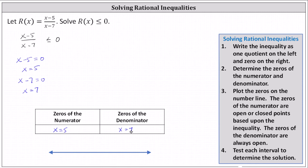Next, we plot the zeros on the number line. The zeros of the numerator are either open or closed points based upon the inequality symbol. If the inequality symbol is less than or equal to, or greater than or equal to, the zeros of the numerator are closed points. If the inequality symbol is less than or greater than, we plot the zeros of the numerator as open points. In our case, because the inequality is less than or equal to, we plot x equals 5 as a closed point. This indicates x equals 5 does satisfy the inequality and is part of the solution. Notice when x equals 5, the fraction is equal to 0, and 0 less than or equal to 0 is true. The zeros of the denominator are always open points because that's where we have division by 0, and division by 0 is always undefined. So we plot 5 as a closed point and 7 as an open point.